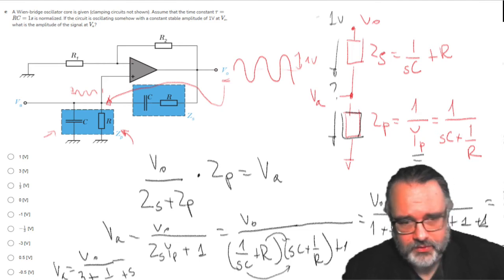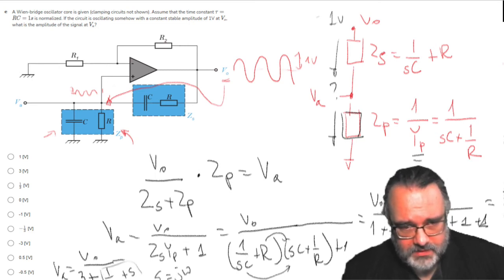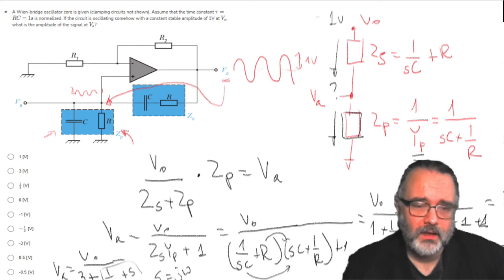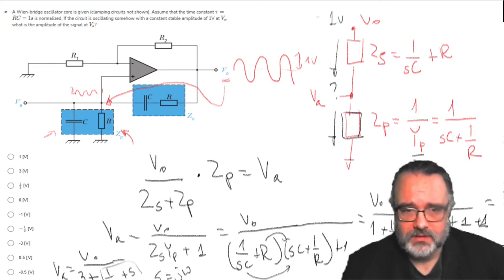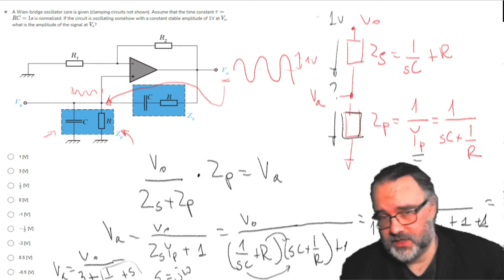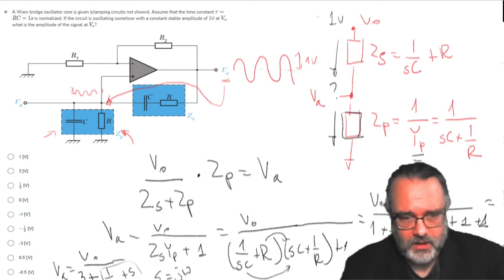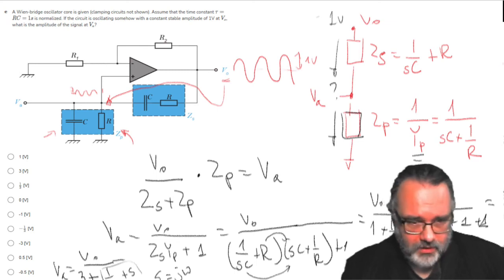So for sine wave signals, for sine wave signals I can substitute that S is j omega, and this becomes the imaginary part. And for signals with stable oscillations to find the transfer I equate the imaginary part to zero because there must be no phase shift in order for the circuit to oscillate.